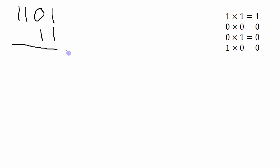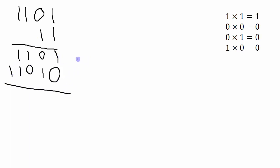Just like with decimal multiplication, we go column by column and do the multiplication with each column, then add the results together. So one times one gives me one, one times zero gives me zero, one times one gives me one, and one times one gives me one. Then we go on to the next column, which is actually 10 times all of this. So we put in the first zero, then multiply by the one: one times one is one, one times zero is zero, one times one is one, and one times one is one. Now we just add up these two rows. One plus zero is one, zero plus one is one, one plus zero is one, one plus one is ten so we have a zero here and carry the one, and then one plus one is ten.